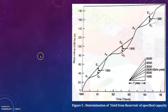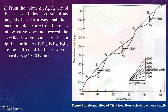Next, from the apexes A1, A2, A3, etc. of the mass inflow curve, draw tangents in such a way that their maximum departure from the mass inflow curve does not exceed the specified reservoir capacity. Thus, in the figure, ordinates E1D1, E2D2, E3D3 are equal to the reservoir capacity, say around 1500 hectare meter.